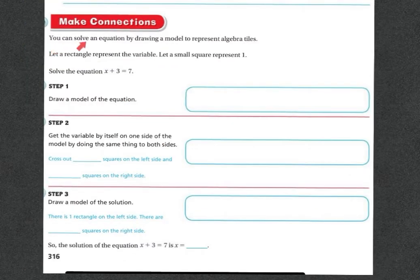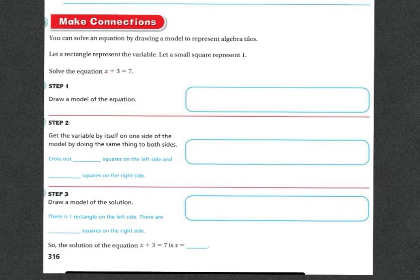Making connections. You can solve an equation by drawing a model to represent algebra tiles. Let a rectangle represent the variable, and let small squares represent the ones. Let's solve the equation X plus 3 equals 7. I'm going to first put my equal sign. On this side I have X, which is a rectangle, and 3 one-tiles, which are squares.